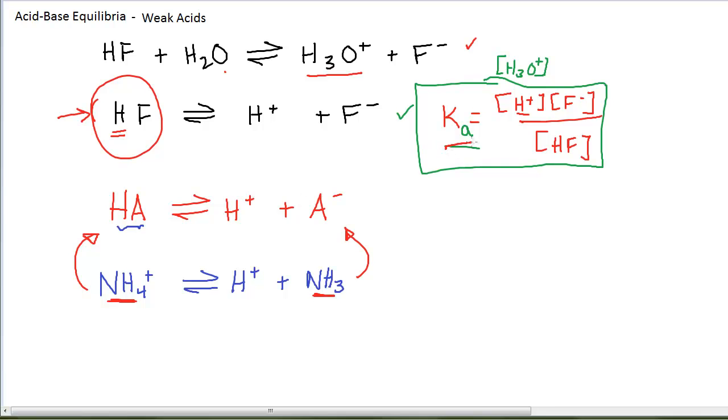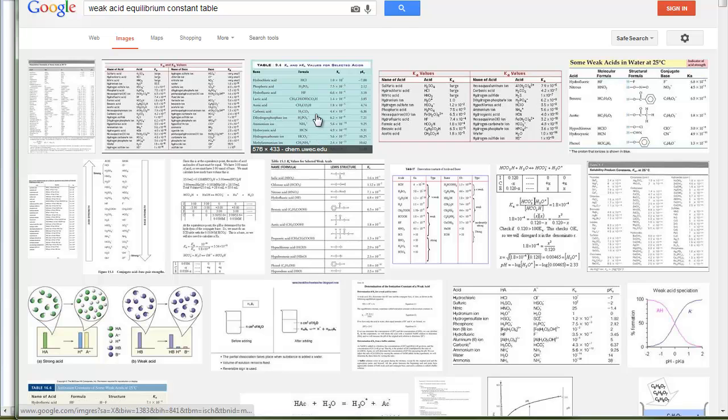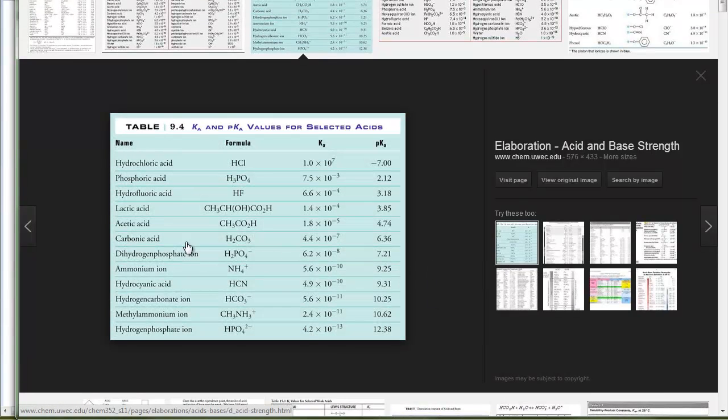The equilibrium constants for these weak acids are so important and so useful that there are tables of values. You have a table of values in your textbook, you have a more complete table in the appendix. And if you need a value for the equilibrium constant for a weak acid that isn't in your tables, you can Google it. And we see some links, and if we go to images, we've got lots of images of tables. These are tables that list weak acids, and they give us the Ka value.